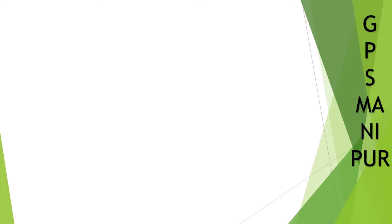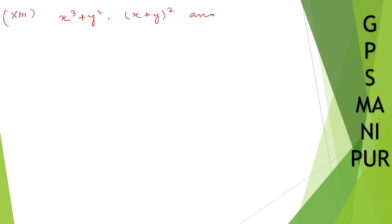We are doing exercise 2.4, question number 2, Roman number 13. We have x cube plus y cube, x plus y whole square, and x square minus y square.